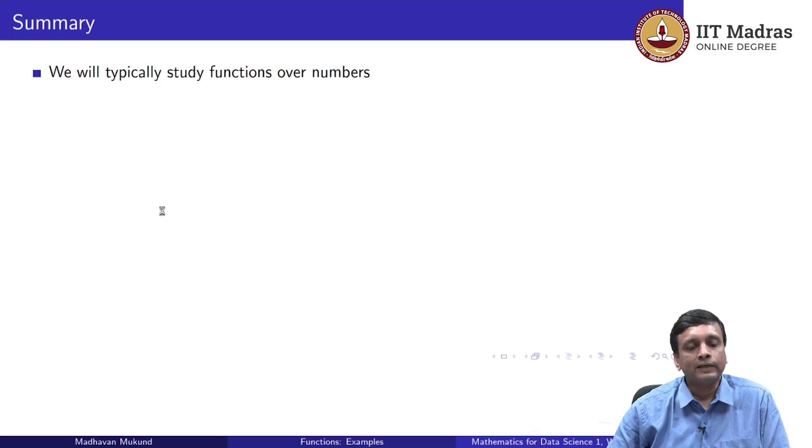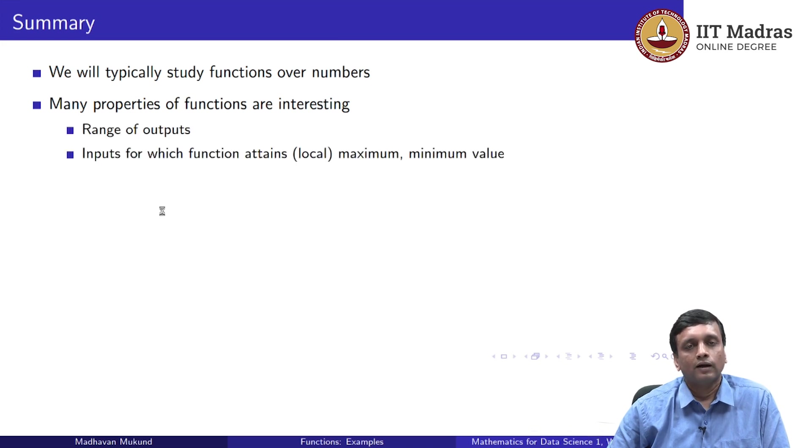So to summarize, we will typically study functions over numbers and we are looking at many properties of these functions which are interesting to us. For instance, the range of outputs, where these functions attain local minima and local maxima, and what are their relative growth rates and many other things which we will come across as we go along. Thank you.